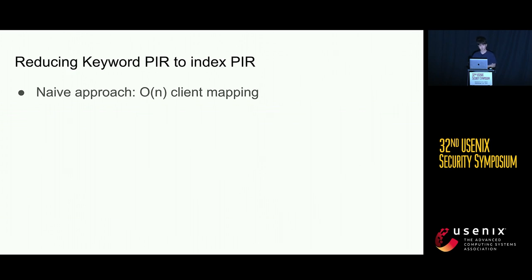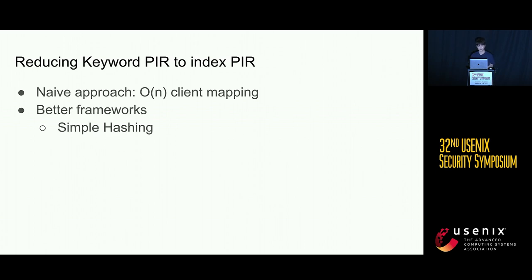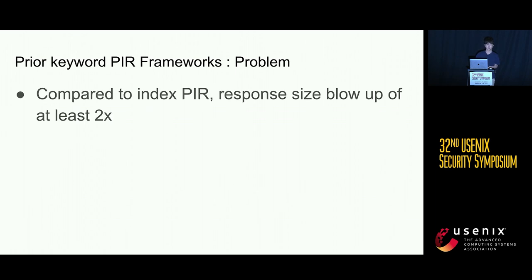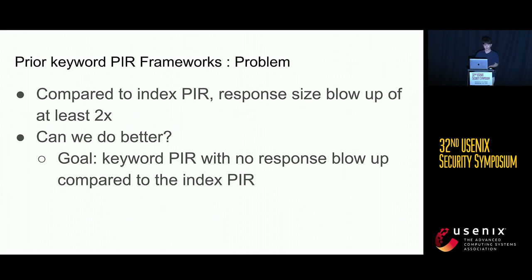There are several ways to reduce keyword PIR to index PIR. One naive approach is to use a linear-size client mapping, but obviously that's not efficient. There are some better frameworks proposed previously, including using simple hashing and the more state-of-the-art cuckoo hashing keyword PIR framework. One problem with these prior keyword PIR frameworks is that, compared to the index PIR counterpart, the response size blows up by at least a factor of about 2x. So the question is: can we do better? The goal is to construct a keyword PIR scheme with no response blowup compared to the index PIR counterpart.